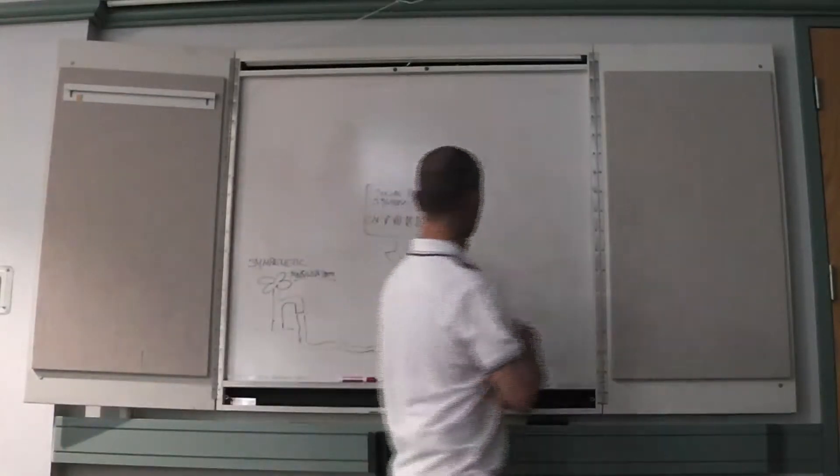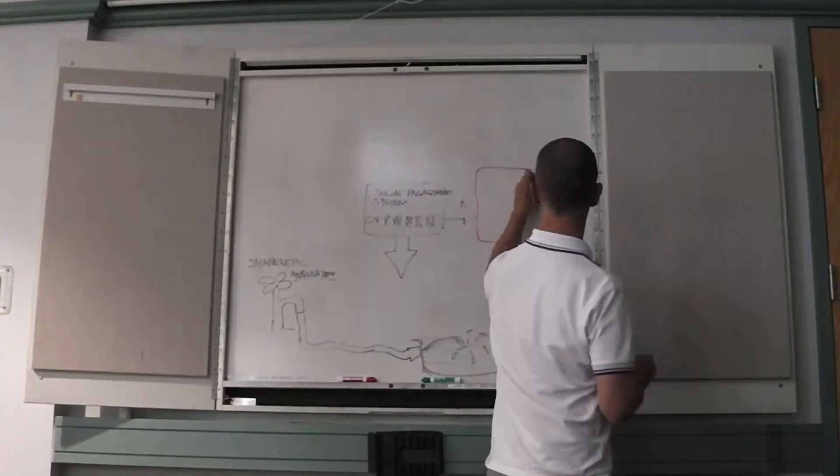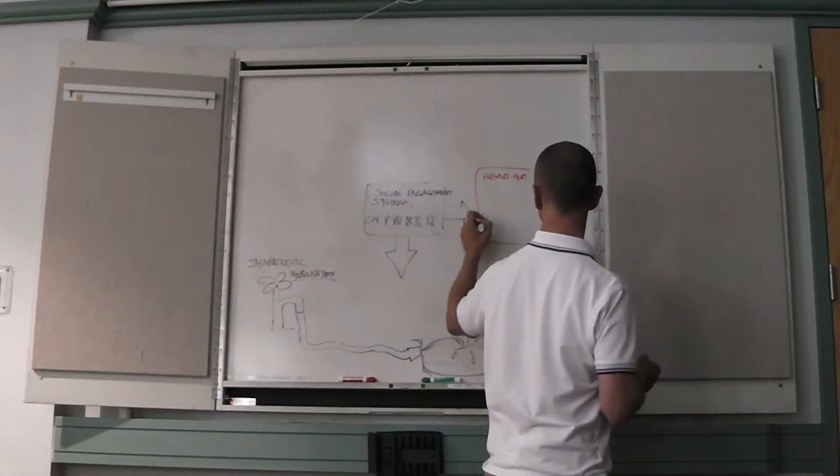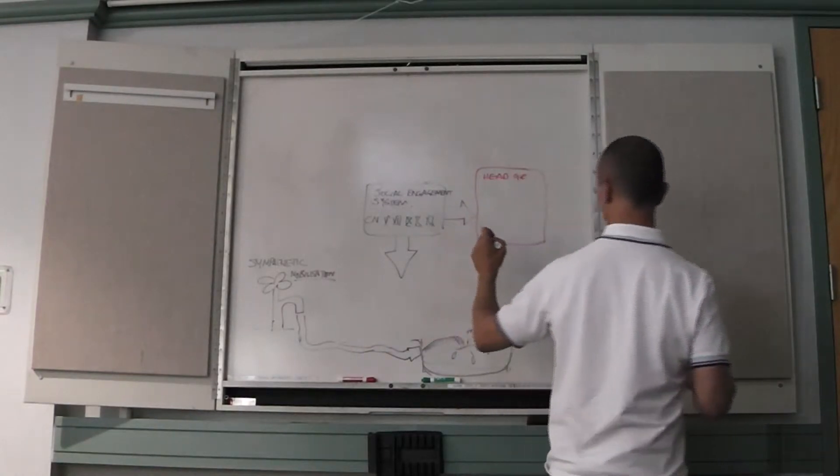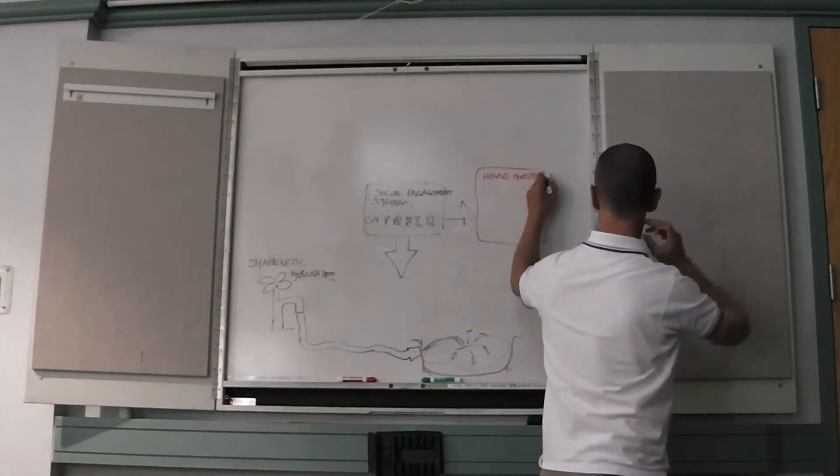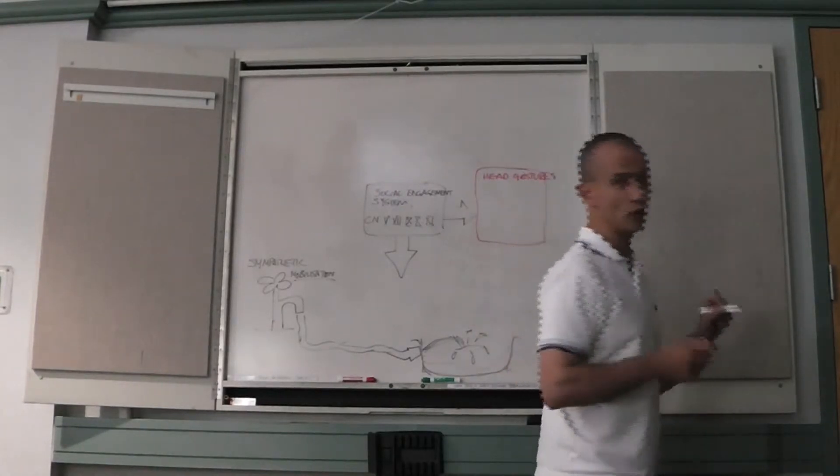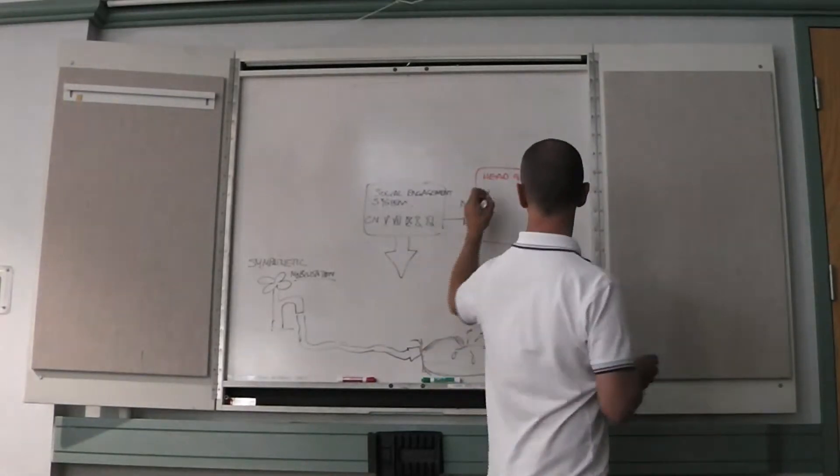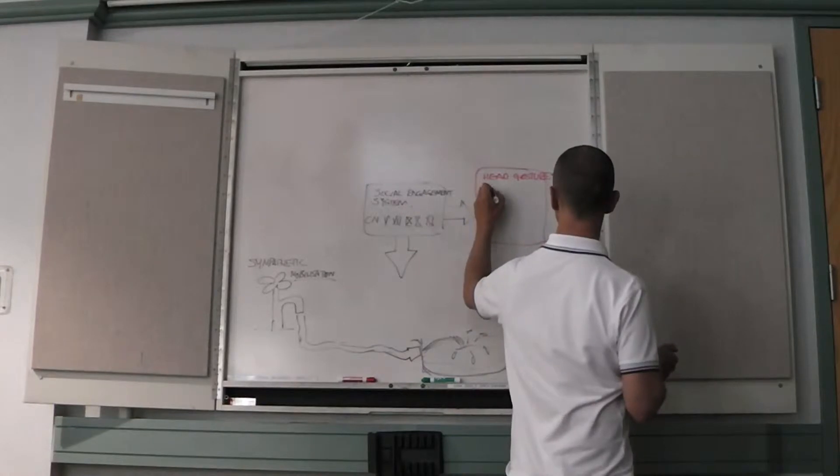They control things like head gestures. So number 9, I get confused, number 11 rather, goes to some neck muscles, so nodding and moving and a very important way of communicating. They control the inner ear muscles.